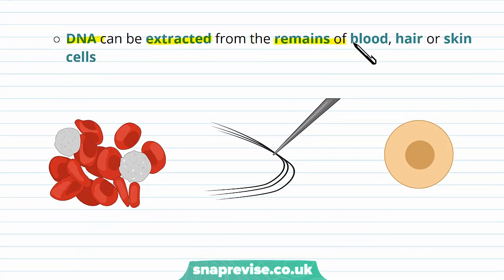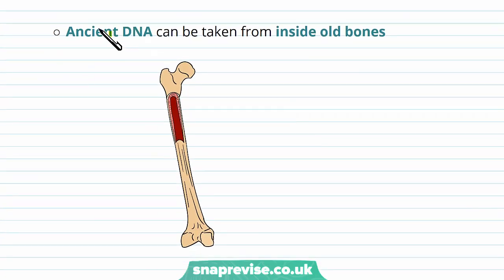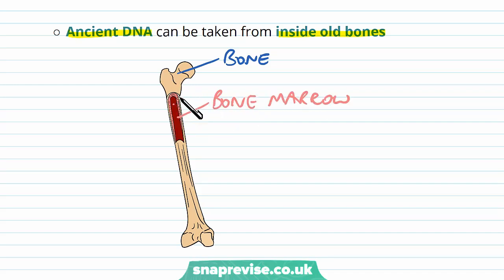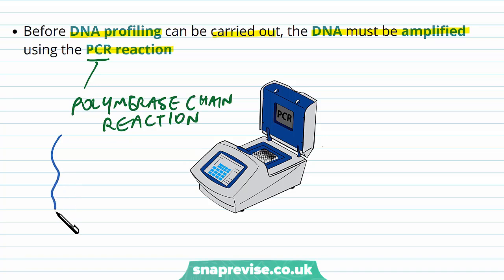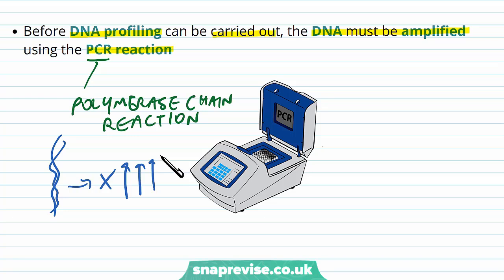The DNA can also be extracted from the remains of blood, hair, or skin cells — for example at a crime scene. We can also obtain ancient DNA, for example from extinct animals, taken from inside old bones. Long bones tend to have a soft centre containing bone marrow, and the bone marrow has many cells where we make blood cells, which of course contain DNA. Before the DNA profiling process is carried out, the DNA has to be amplified using the PCR reaction — the polymerase chain reaction — where we take a strand of DNA and multiply it many times so that we have many copies to work with, and backup supplies in case one gets damaged.